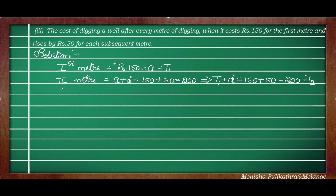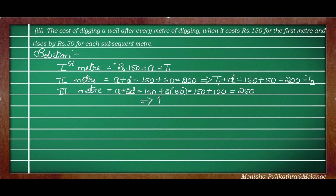For the third meter: A + 2D = 150 + 2×50 = 150 + 100 = 250. In alternate method, T3 = T2 + D = 200 + 50 = 250. This is the third term.